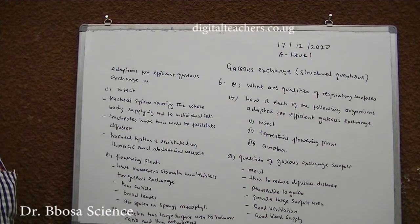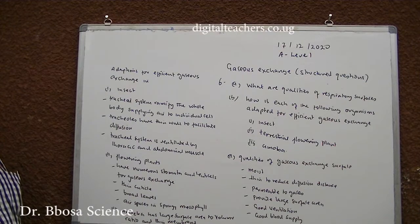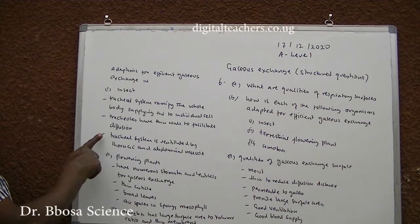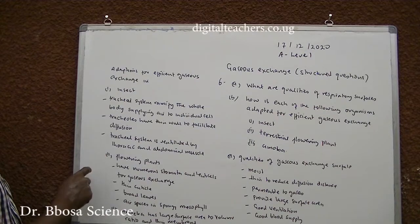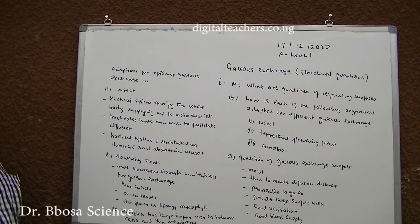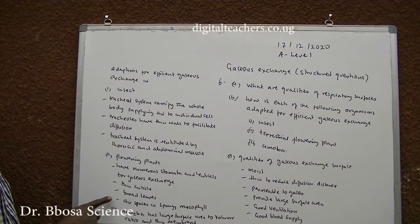How is each of the following organisms adapted for efficient gaseous exchange? Adaptations for efficient gaseous exchange in insects: 1. Tracheal system ramifies the whole body, supplying air to individual cells. 2. Tracheae have thin walls to facilitate diffusion. 3. The tracheal system is ventilated by thoracic and abdominal muscles. Adaptations in flowering plants: 1. Have numerous stomata and lenticels for gaseous exchange. 2. Has thin cuticle. 3. Has broad leaves to provide a large gaseous exchange surface. 4. Air spaces in spongy mesophyll facilitate diffusion.